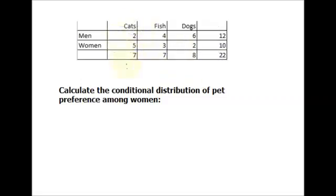And a conditional distribution is anything in the middle here like the column for cats or fish or dogs. We're going to calculate the preference of women for pets. So the distribution we're looking at is this one right here.